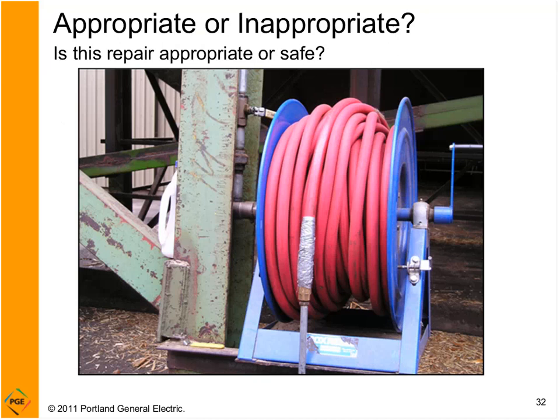Common leak sources: worn hoses (like the one a forklift ran over), worn cylinder packings and glands, valves and regulators, pipe joints and flanges. In a sawmill, constant vibration from logs eventually leads to blown gaskets and leaky joints. In this photo: good old duct tape on a pipe connection — not only a potential leak source since the leak will find its way through, but a safety hazard. If there's an aneurysm inside, it could blow out and become a missile. The positive: the valve is shut off when not in use.